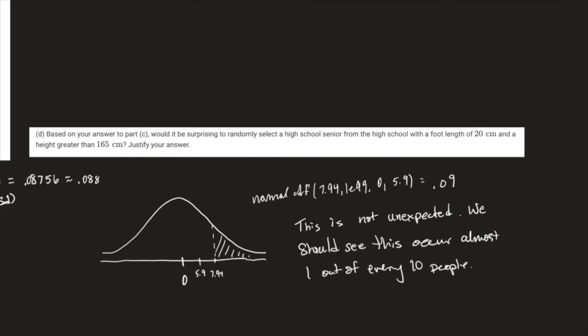If you got all three parts that would have been an E; two parts would have been a P; one part would have been an I. That concludes this progress check. We'll be doing some review tomorrow — just basic linear regression, some multiple choice questions — and you can ask me questions online.